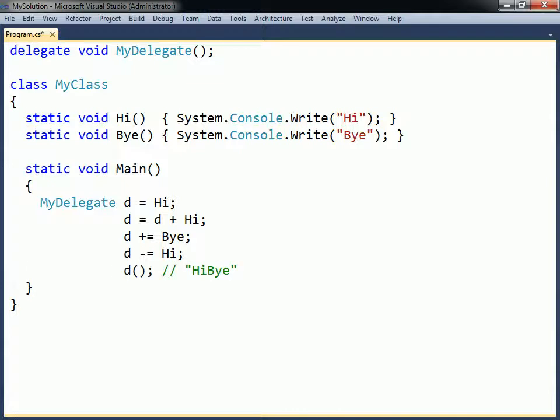When calling a multicast delegate object, all methods in its invocation list will be invoked with the same arguments, in the order that they were added to the list.